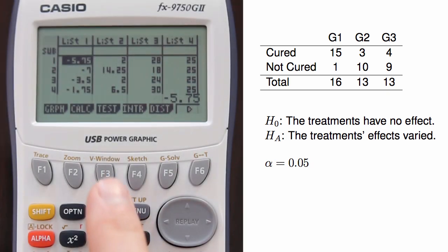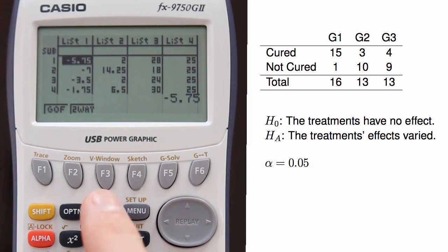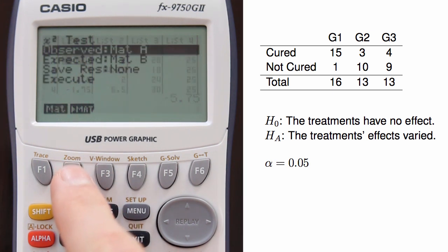To do so, navigate to test, then to chi for chi-square. Since we can select a test for a two-way table, select two-way.